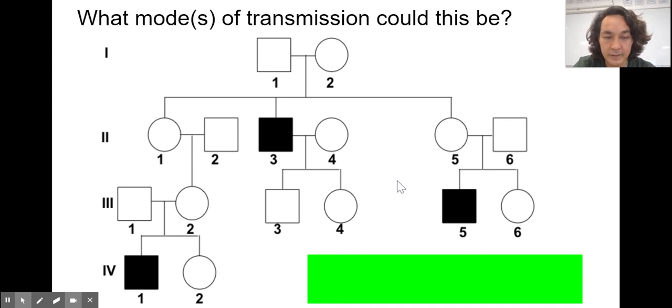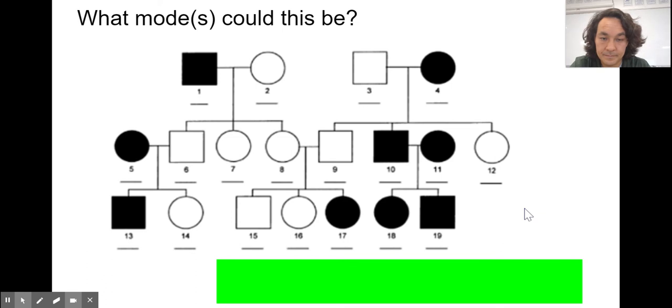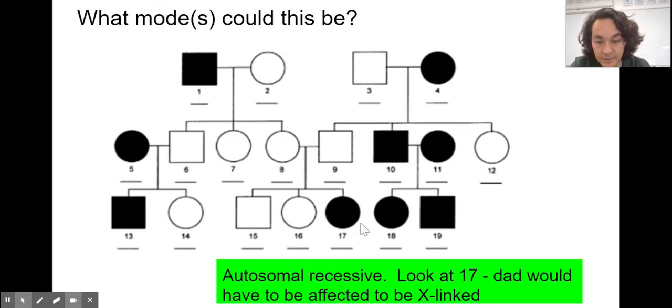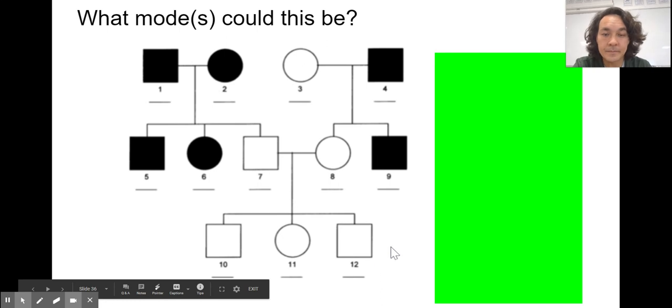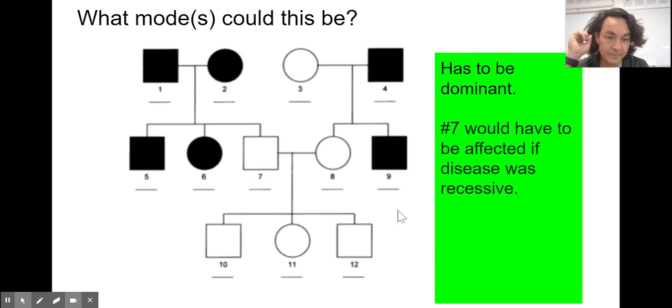All right. Can you look at this pedigree and figure out what mode of transmission this might be? Pause the video and check. So, it could be sex linked or autosomal. So, autosomal recessive. It can't be dominant, right? It skips a generation. But this could be either sex linked or autosomal. How about this one? Autosomal recessive. Let's look at number 17. If this was sex linked, then the dad here in box nine would have to have the disease, because he only passes on one X. It can't be dominant because, look, it skips a generation right here. All right. What about this one? Has to be dominant. So, here it's passed on. But if it was homozygous recessive, then seven would have to have it. If two parents are autosomal recessive, homozygous recessive, then number seven would have to have it.